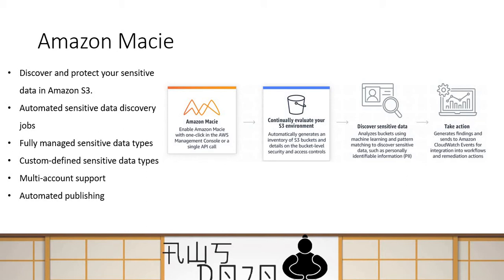How does Macie identify the sensitive data? It has fully managed sensitive data types with its own machine learning and algorithms to find what is sensitive data. It categorizes sensitive data as personal information, credit card information, intellectual property, or credential information and keys. It has built-in data types fully managed by AWS. But if you want to define certain custom sensitive data types specific to your organization, you can create your own type of finding as well.